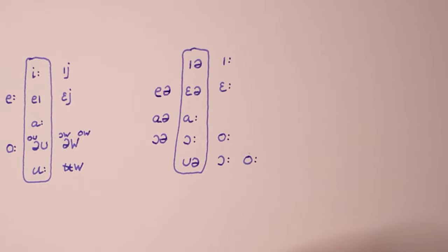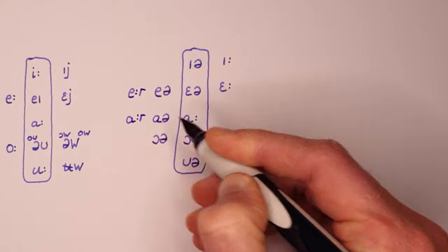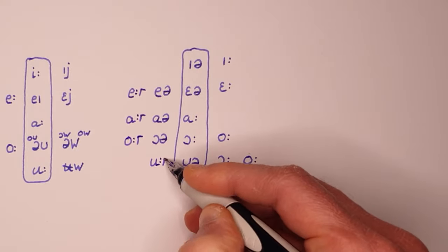In the north, all of these five vowel phonemes remain long vowels, followed by an R sound: ir, er, ar, ur, ur.